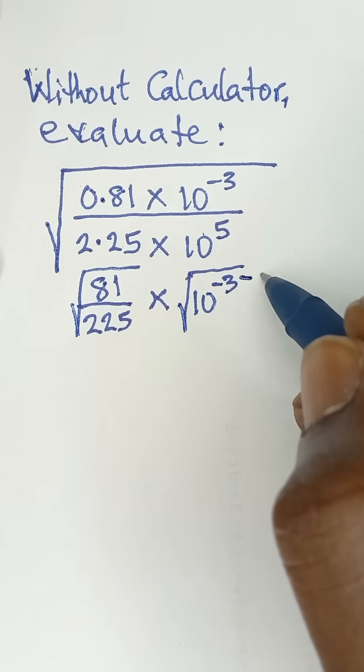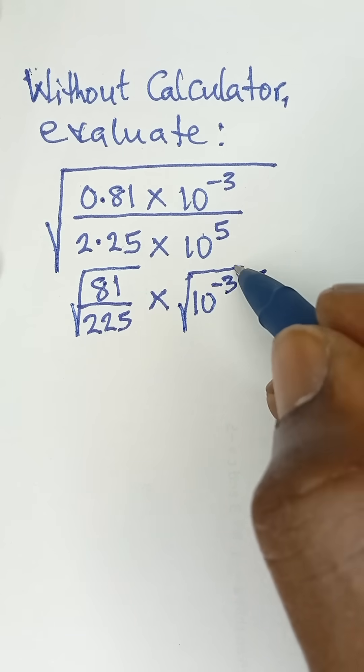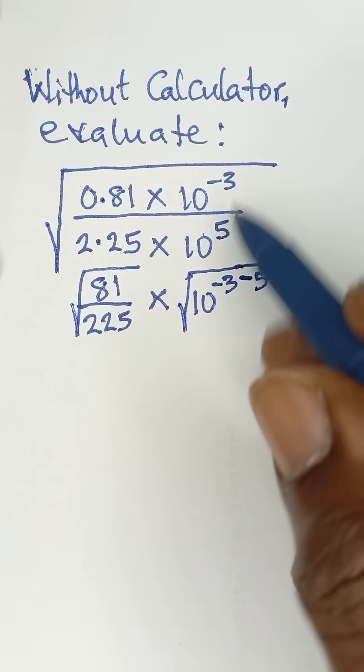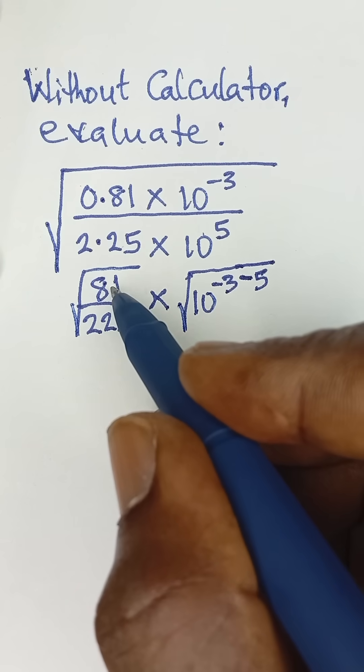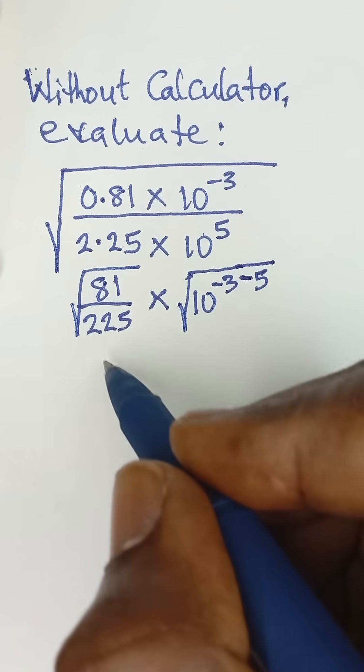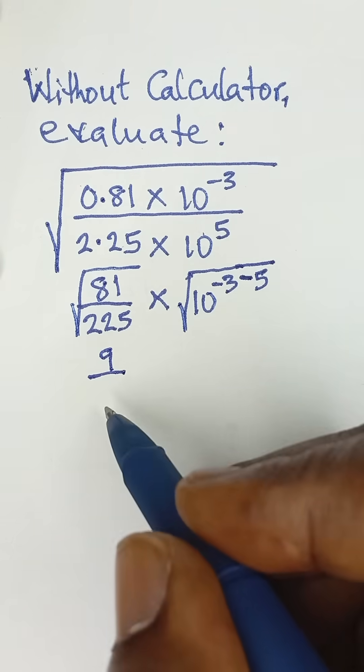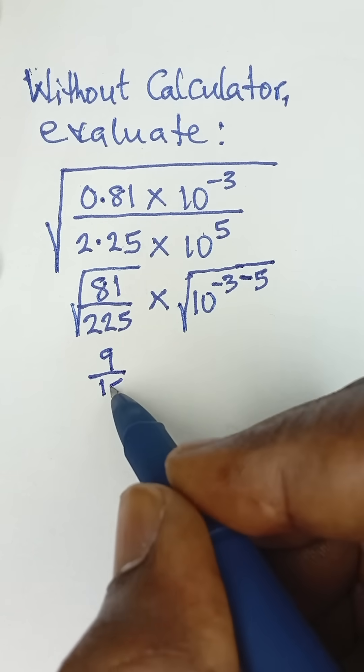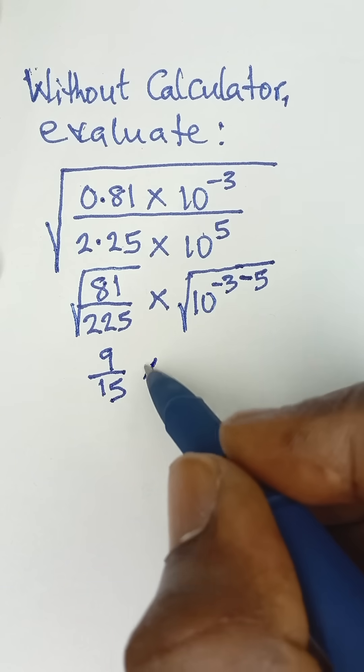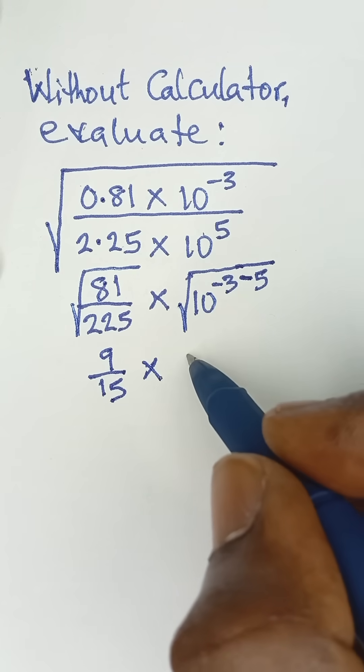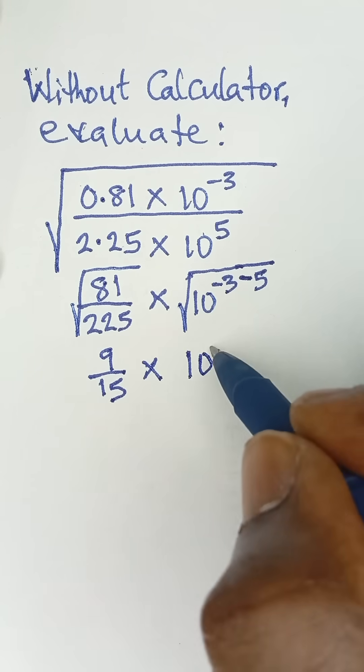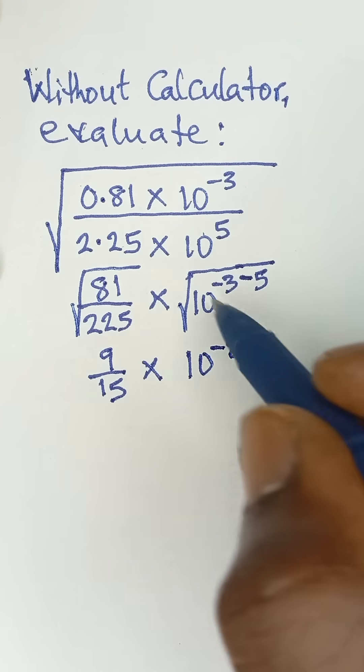That is subtracting the power now, so that means the square root of 81 is 9 and the square root of 225 is 15, and then all multiplied by 10 raised to the power negative 8.